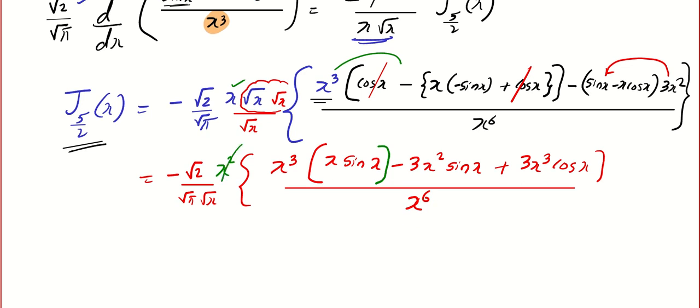The whole divided by x⁶ and of course this x·√x·√x, this x² is waiting outside. This x³ will get cancelled so we get x⁴. So -√2/√π·x, this will give x⁴ sin x - 3x² sin x + 3x³ cos x.